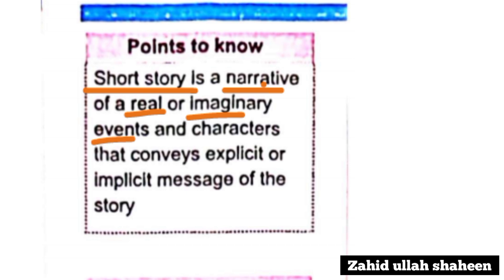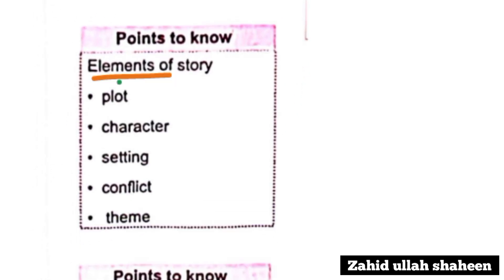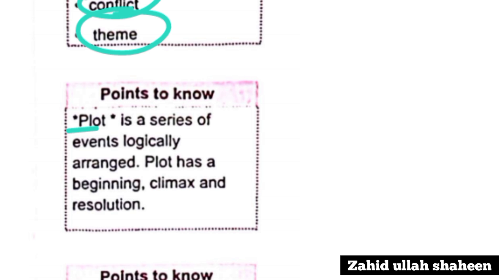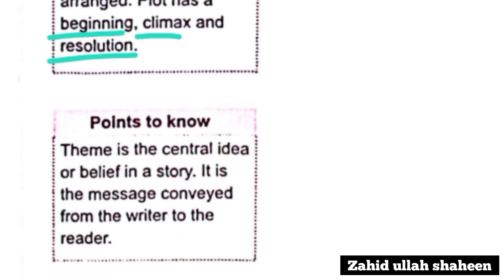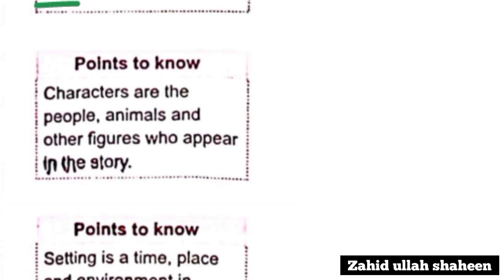The event and character can exploit a message in a short story. The elements of the story include: the story, the plot, and the character. The plot is a series of events — beginning and climax. The central idea or belief in the story is the message from writer to reader. Characters can be people or animals.